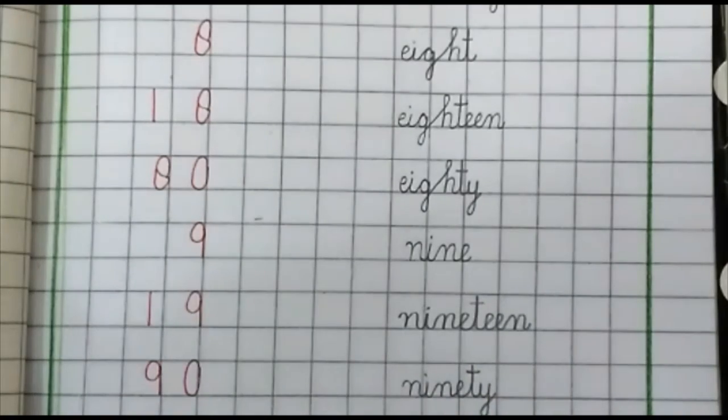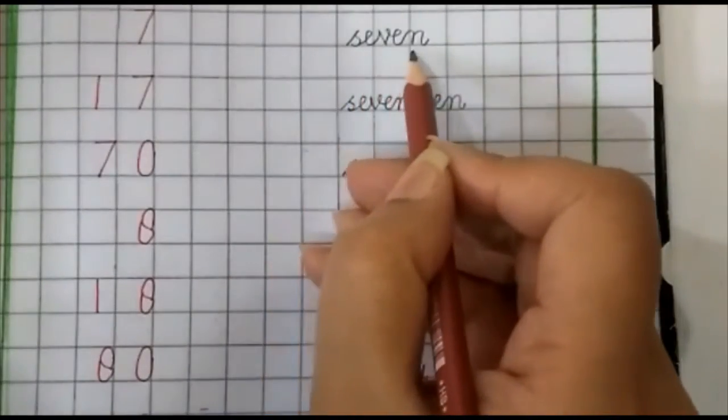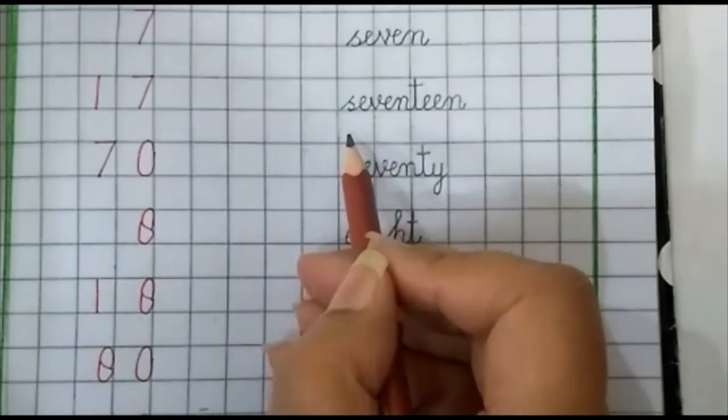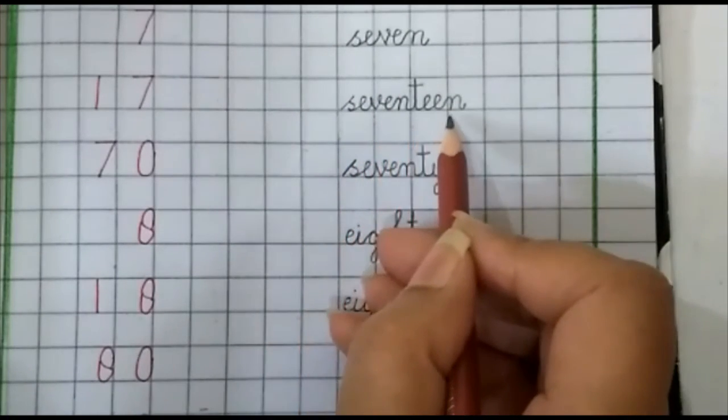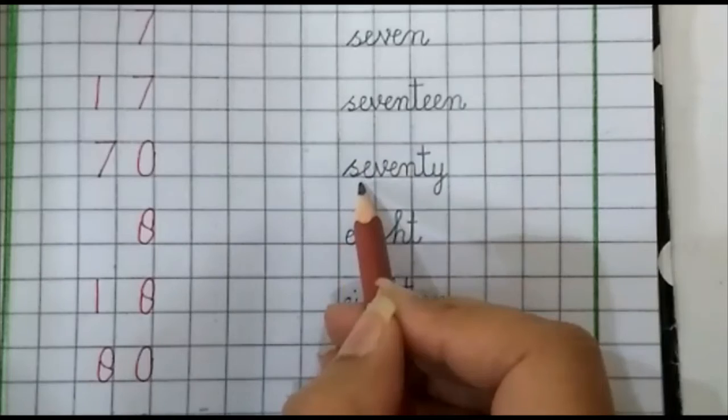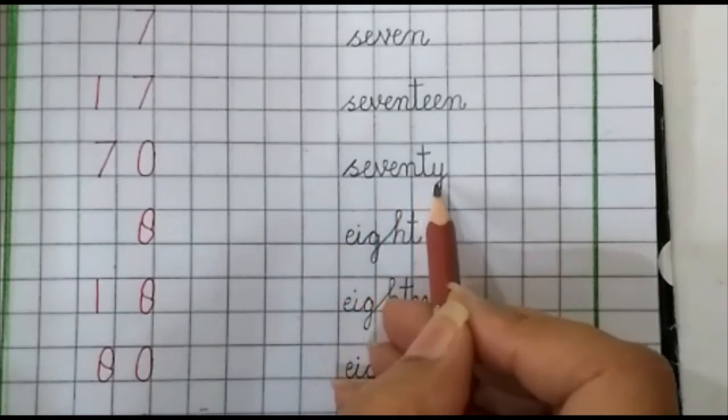Again read with me prep class. S-E-V-E-N, seven. S-E-V-E-N-T-double E-N, seventeen. S-E-V-E-N-T-Y, seventy.